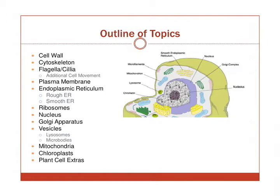We'll look at the plasma membrane and then take a look at the different organelles. These include the endoplasmic reticulum, the nucleus, Golgi apparatus, different vesicles, the mitochondria, and chloroplast.